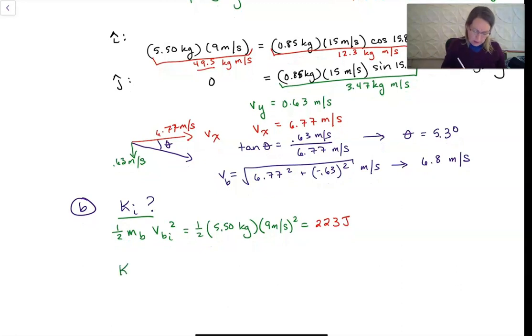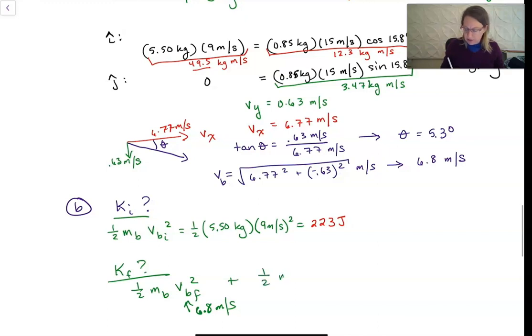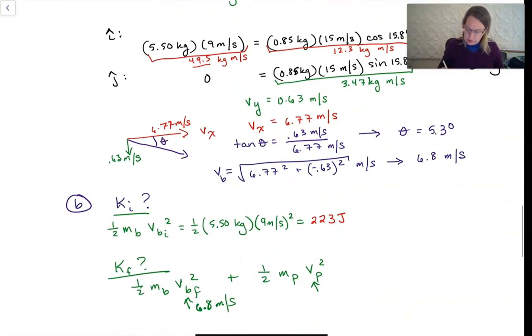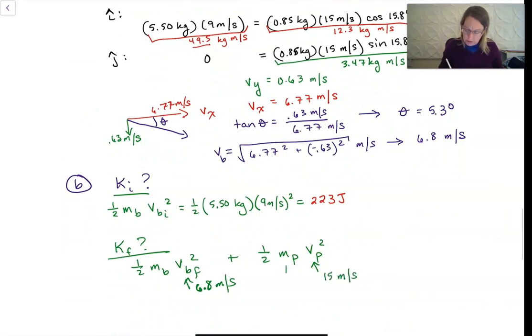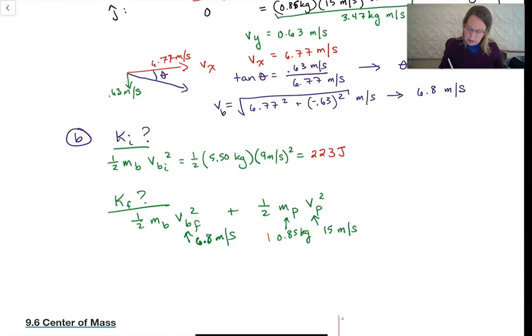Kinetic energy final is one half mass of the ball times the ball final squared, so that's my 6.8 meters per second, plus one half mass of the pin, its speed squared, and that was 15 meters per second. That's 0.85 kilograms. I get that the pin has 95.6 joules of kinetic energy and the ball has about 127 joules of kinetic energy. When I add these together, I get 223 joules. So it is, in fact, an elastic collision.